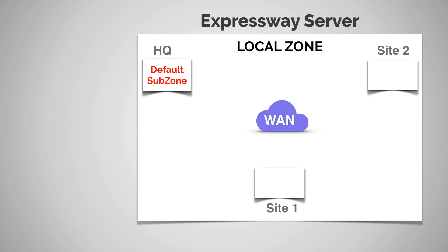I'm purposely leaving out the traversal subzone and the default zone just to keep this simple — in a real scenario you'd want to take those into account as well. When we go across this WAN, depending on the connection, each location may have different bandwidth capabilities. From headquarters they might have a four meg connection, site one might have a two meg connection, and site two might have only a one meg connection.